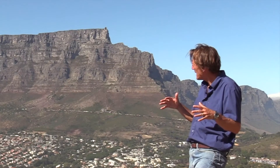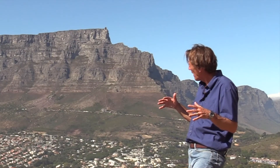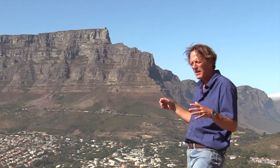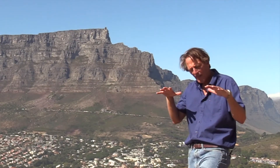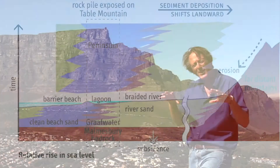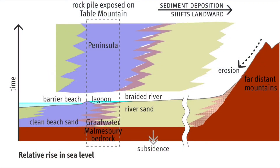As that surface was going down and those sandstones were being deposited stacked one on top of the other, at the time the sands of Table Mountain were being deposited, this basement surface was subsiding — sinking. That sinking allowed for what we call accommodation space.